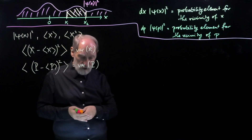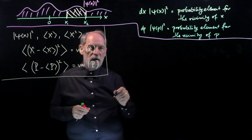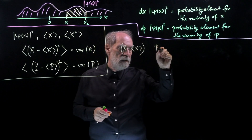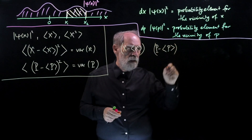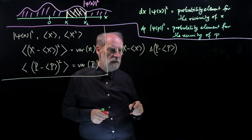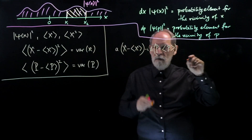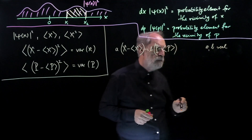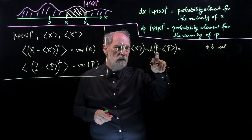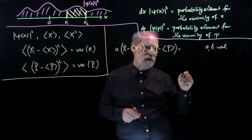Now let's try to say something more general about the situation. I will follow a standard argument that begins by taking (x minus ⟨x⟩) and (p minus ⟨p⟩), multiplying them by real constants a and b that I will choose later, and also multiplying by a factor of (a − ib). So a and b are real and we choose them later. This gives us a new operator C, which is a linear combination of the position and momentum operators with those expectation-value numbers.